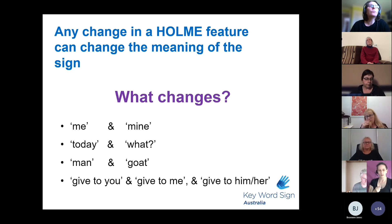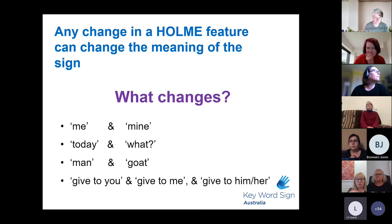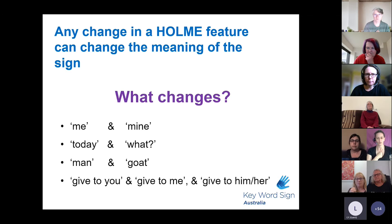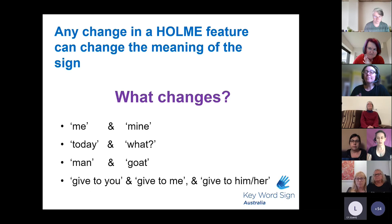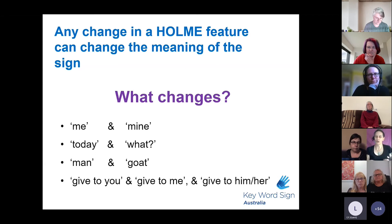Here are some examples. I can change 'me' to 'mine' — what have I changed? The handshape. So by changing the handshape, I've changed the sign. What about 'today' versus 'what'? Location — absolutely. What about 'man' versus 'goat'? Movement, and a little bit of orientation because the palm moves out. And with 'give to you', 'give to me', or 'give to them' — I'm changing my direction. Although I haven't changed the sign, I have added some meaning by changing the movement.